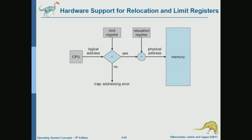If the offset is less than the limit register, it's valid and we move to the next step. If not, we trap to the operating system — the program is trying to access something out of bounds. If validation passes, we look at the relocation register and add the offset to its value. Since the relocation register is set by the operating system, we don't need to check again — adding the valid offset to the guaranteed-valid base gives us the physical address of that memory reference.